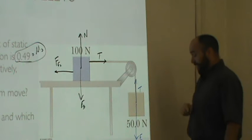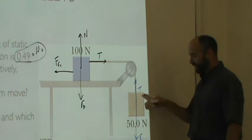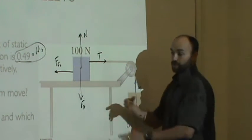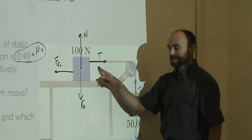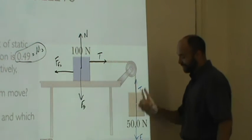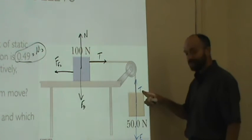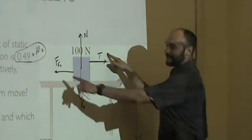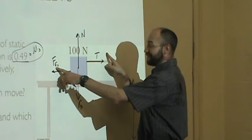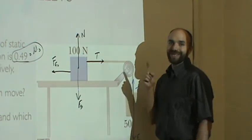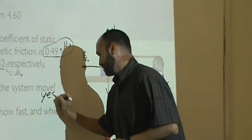Summing forces in y for the hanging block: if the system isn't moving, tension and weight add to zero, so tension equals 50 N. That means the tension pulling the blue block is also 50 N. But the maximum static friction can only provide 49 N. Since 50 > 49, the tension exceeds the maximum static friction — therefore, yes, the system will move.